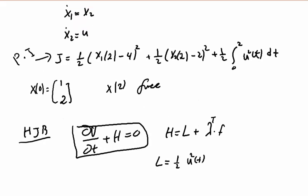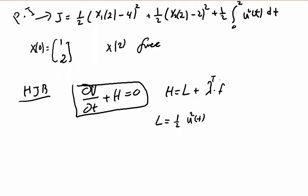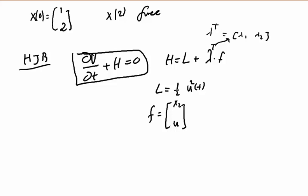Because we have two states in the system, λ will be a vector with two lambdas: λ1 and λ2. Because we have two states, I have two lambdas here. This will be equal to λᵀ, which is a column vector.